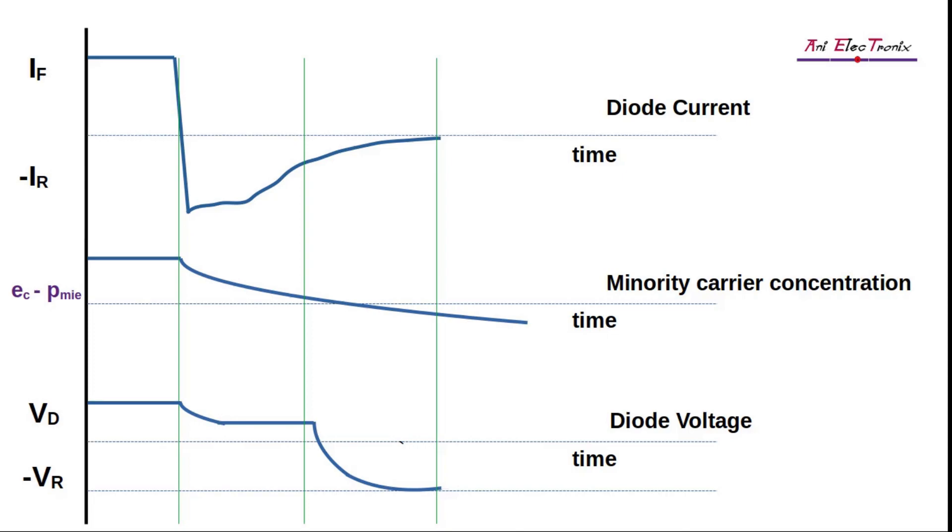According to the graph, as the diode switches from on to OFF, the minority charge carrier concentration decreases and this time is also known as the storage time. The transition time is the amount of time it takes the diode to reach steady state after the storage time has been completed. Therefore, the combination of the storage time and the transition time is the reverse recovery time.